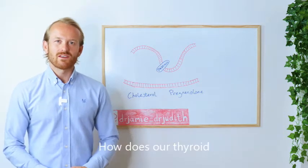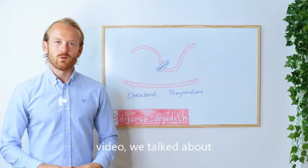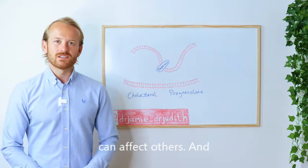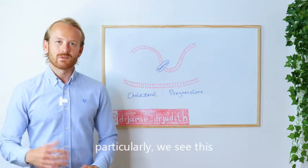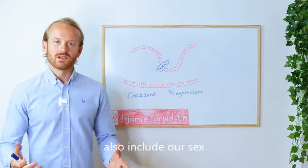How does our thyroid affect the rest of our hormones? In our last video, we talked about how hormones are all interlinked, and if one comes out of balance, it can affect others, particularly we see this with the thyroid and our steroid hormones, which also include our sex hormones.